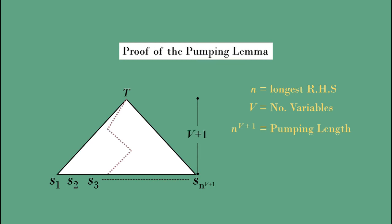That path has at least V plus 2 nodes: one of them is a terminal, the others are variables. Hence that path has at least V plus 1 variables, and one of those variables has to repeat.